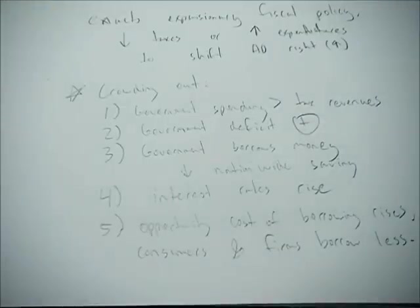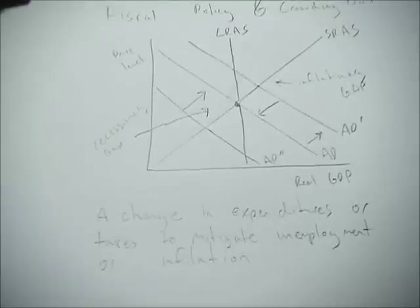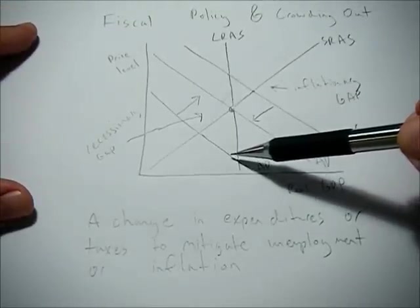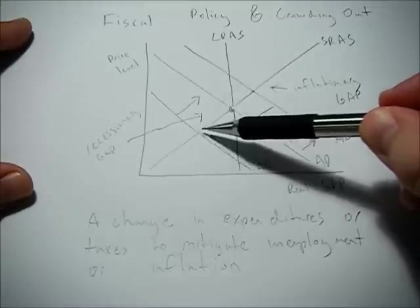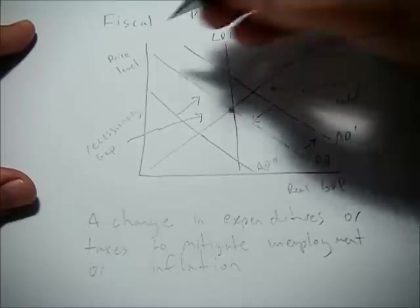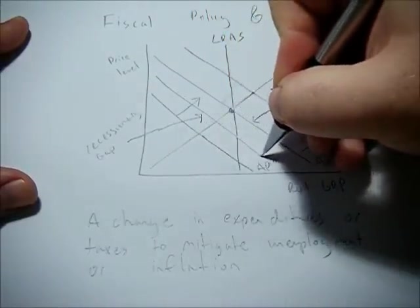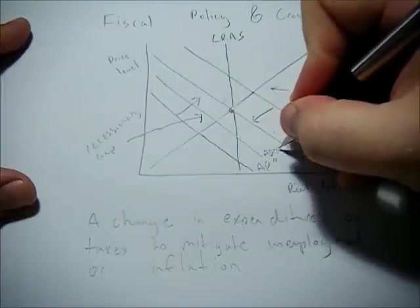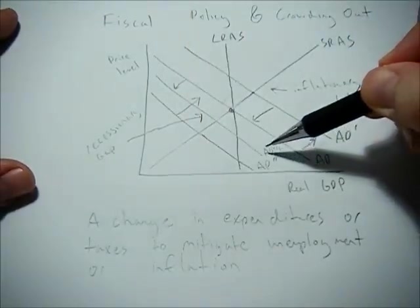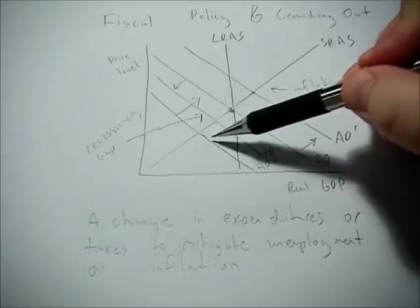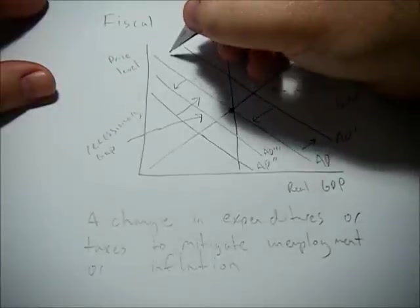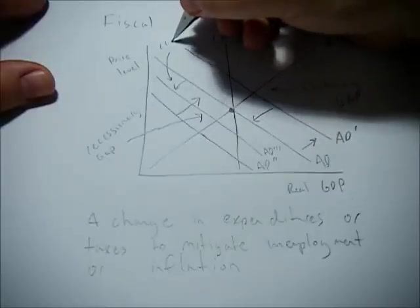So what does this mean when we go back to our original aggregate demand, aggregate supply model? We saw here that if we were in a recessionary gap, what the government could do is enact expansionary fiscal policy to get us back to equilibrium. However, when they do that, they increase interest rates, which decreases investment and consumer borrowing, which will actually shift the aggregate demand curve left a little. So if the government does enact expansionary policy, there's potential for crowding out, which would be this arrow right here, to occur.